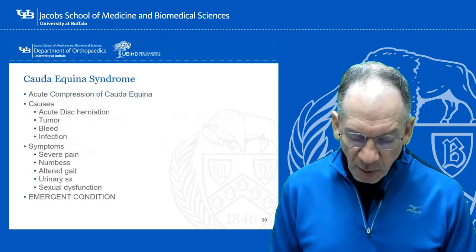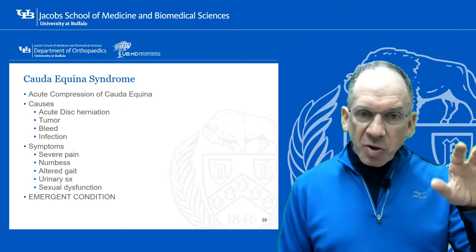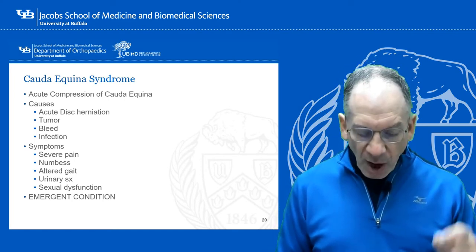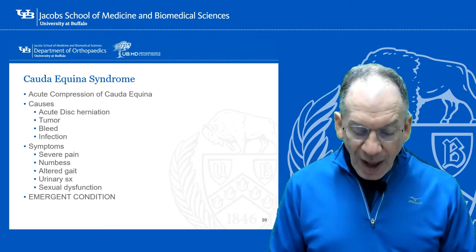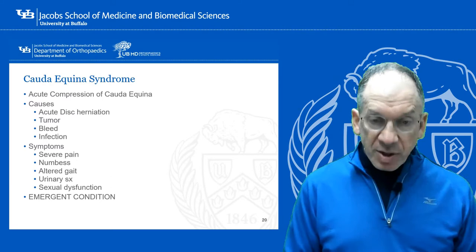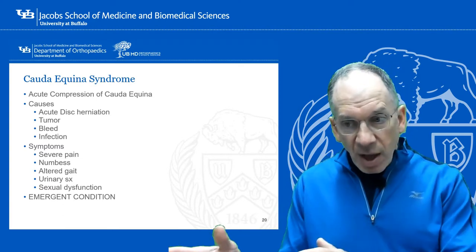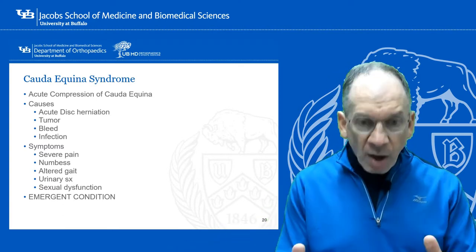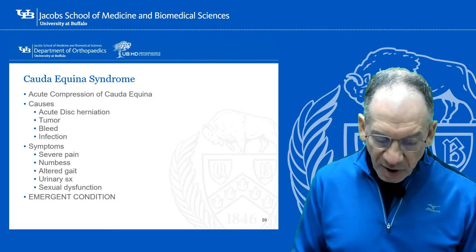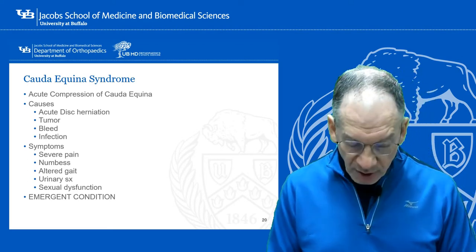Cauda equina syndrome is acute compression of the cauda equina, occurring below the level of the cord — at L1/L2. Causes include acute disc herniation in the lower lumbar spine or any acute space-occupying lesion such as a tumor bleed or infection. Symptoms are usually abrupt and severe, consisting of severe pain, numbness, altered gait, urinary retention, and sexual dysfunction. This is an emergent condition.